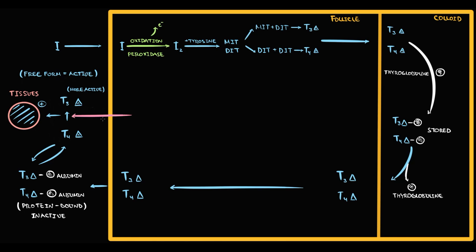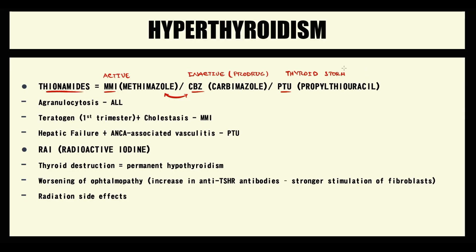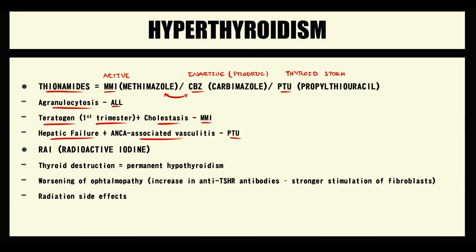Interestingly, one of the effects of beta-blockers is also inhibition of T4 to T3 conversion, thereby decreasing the biological effect of thyroid hormones in tissues. However, thionamides have side effects: all of them can cause agranulocytosis, reducing the amount of neutrophils in the blood. Methimazole has teratogenic effects during the first trimester and can cause cholestasis. Propylthiouracil can cause hepatic failure and ANCA-associated vasculitis.